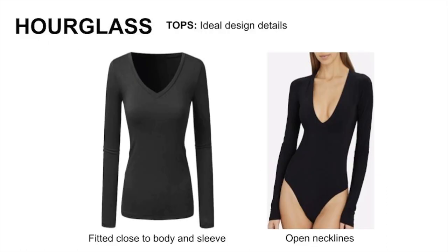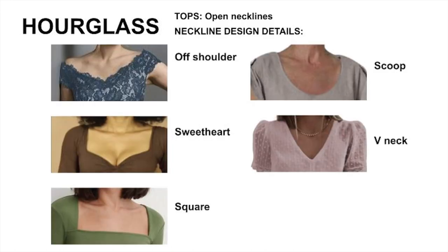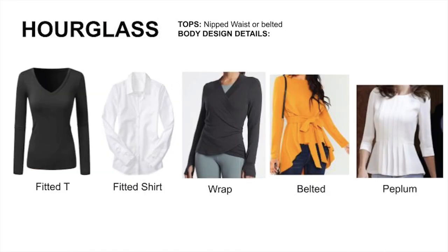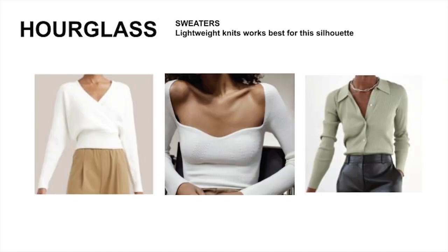For tops, here are two key design details to look out for. Notice that tops accentuate the hourglass shape with open necklines and slim-fitting sleeves. Here are some examples of open necklines. These are the best sleeve design details for the silhouette. Make sure the body shape is always nipped at the waist.